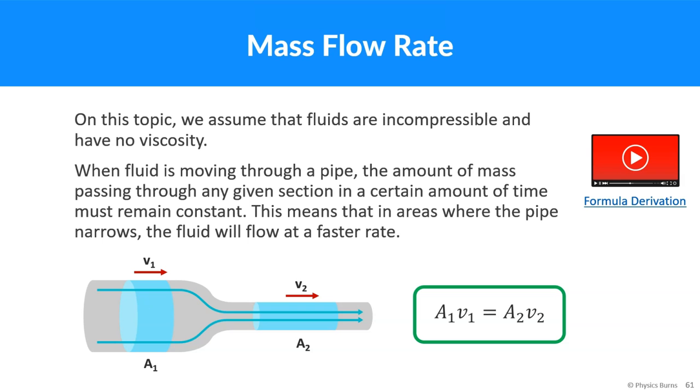So mass flow rate. I guess this is kind of like the guiding principle of fluid dynamics. On this topic, we assume that fluids are incompressible and have no viscosity. When fluid is moving through a pipe, the amount of mass passing through any given section in a certain amount of time must remain constant. This means that in areas where the pipe narrows, the fluid will flow at a faster rate.